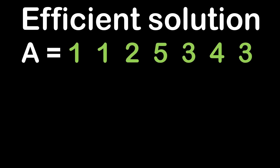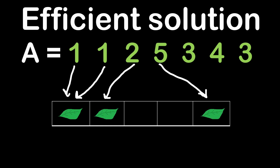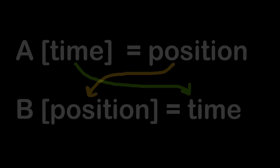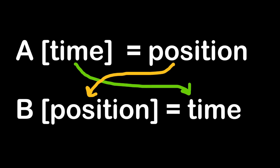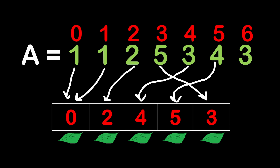Let's think of a more efficient approach. Looking at the input array, at each second we are filling one leaf position. The first two seconds fill position one, then position two, then position five, then position three, then position four. To find the earliest time all positions are filled, it would be easier to have the information in a different array B where the index represents the position of the leaf and the value represents the time at which that leaf fell. We check all values in array A and for each value taken as an index, we store the earliest time that value occurred.